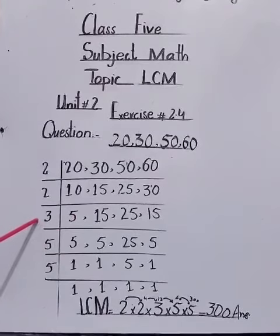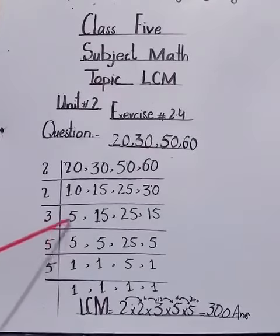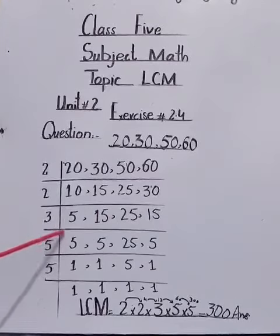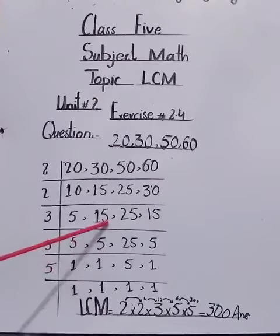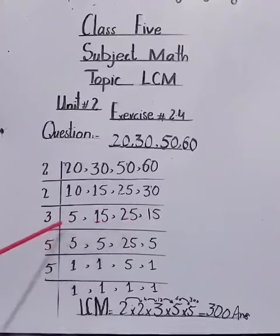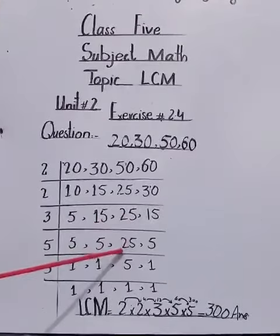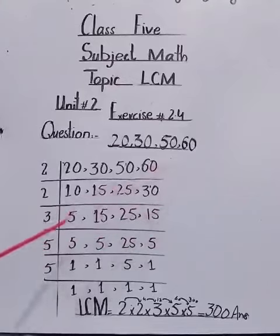3. On table of 3, 5 times 2 are 10, not divided, it will remain same. 3 times 5 are 15. 3 times 5 are 15. 25 also will not divide on table of 3, 25 will come down same. 3 times 5 are 15.